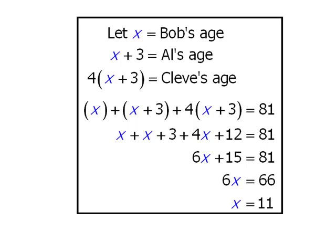Now keep in mind that x represents Bob's age, so we now know that Bob is 11, and this means Al is 14 and Cleve is 56.